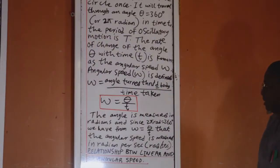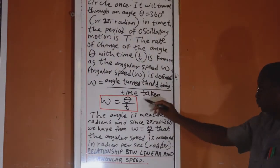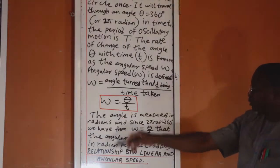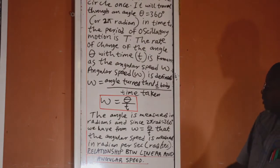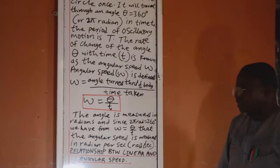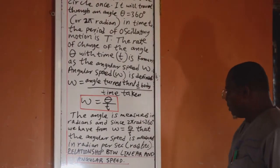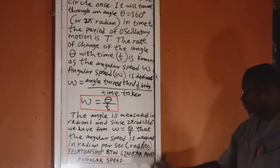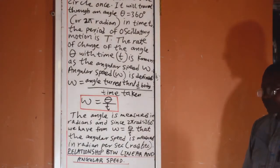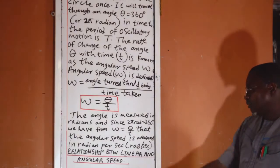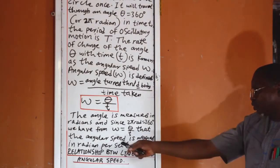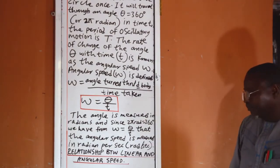This is the angular speed, and this one is angle turned through the body over time taken. The symbol of angular speed is omega. The symbol of angle turned through the body is theta. And the symbol of time taken is t. The angle is measured in radians. And since 2 pi radians is equal to 360 degrees, we have from omega is equal to theta over t that the angular speed is measured in radians per second.